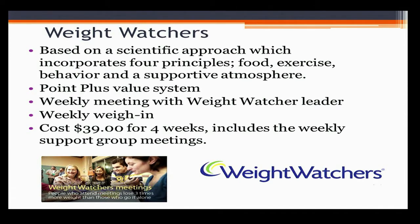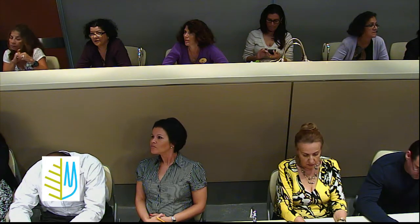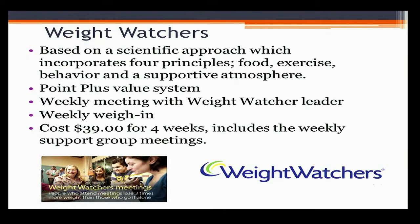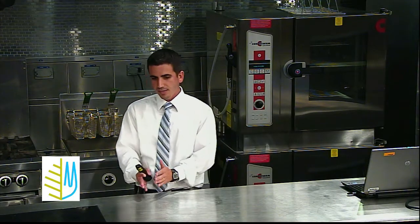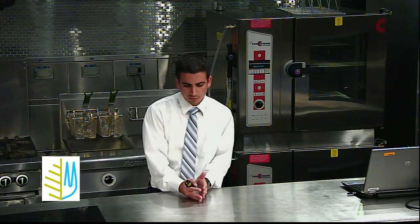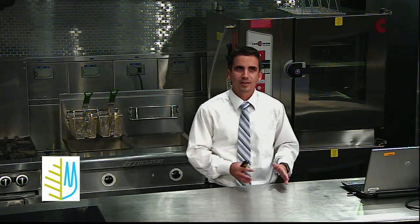Their four principles are food, exercise, behavior, and a supportive atmosphere. For food, they have a point-plus value system, assigning points to foods based on how healthy they are — looking at protein, fiber, and carbohydrate content. Higher-fiber foods have fewer points. You're assigned a certain number of daily points based on your target weight. For example, broccoli might be 0 to 1 point, whereas a slice of pizza could be about 10 points. If you're allowed 30 points per day and eat three slices of pizza, you're done for the day.